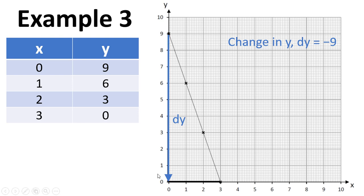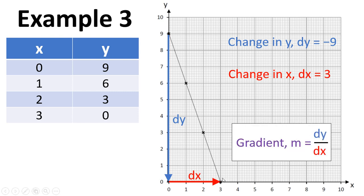And then DX, we have to move across three. And again, the gradient is given by change in Y divided by change in X. So minus nine divided by three is minus three. The intercept we've already seen is nine. So we've got line of best fit Y equals minus three X plus nine.